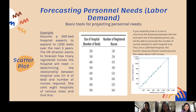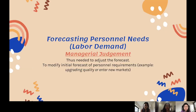Here are the graphs describing and explaining the scatter plot. There is also forecasting personnel needs and labor demand using managerial judgment, which is needed to adjust the forecast to modify initial forecasts of personnel requirements — for example, when upgrading quality or entering new markets.